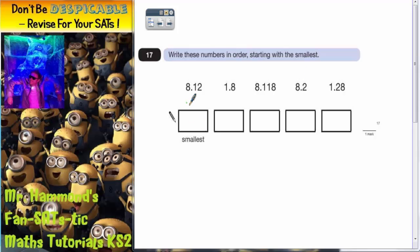Now the first thing you can see straight away is that three of the numbers begin with 8 point something, and two of them begin with 1 point something. So the 1 point something numbers must be smaller than the 8 point something numbers.